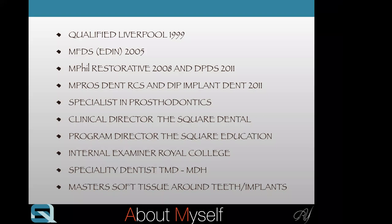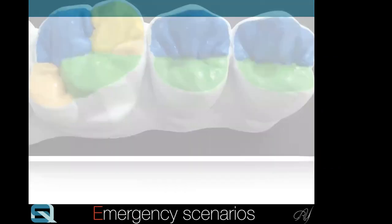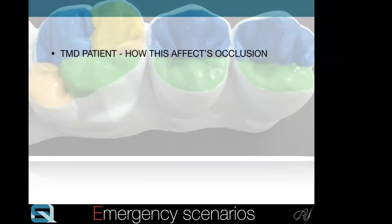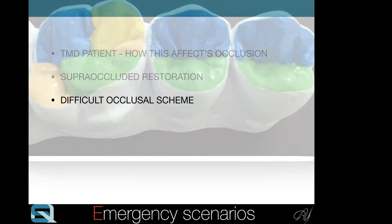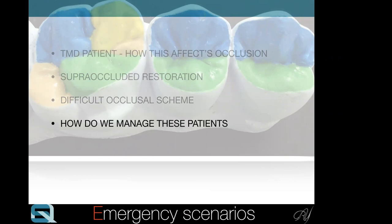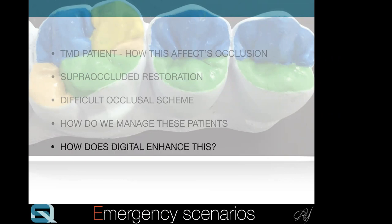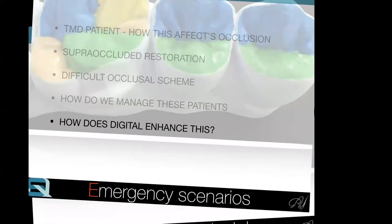A little bit about myself: 20 years qualified. I recently finished a master's in soft tissue with Professor Zucchelli in Bologna, which was very interesting and rewarding. Today I'll discuss three scenarios: one is a patient and how this affects occlusion; a procluded restoration — one that is proud, meaning super-occluded; and a difficult occlusion scheme where people think complex restorative dentistry is needed, but that isn't always the case. If we have time, we'll also touch on digital dentistry and how it enhances special occlusion.